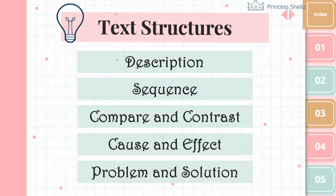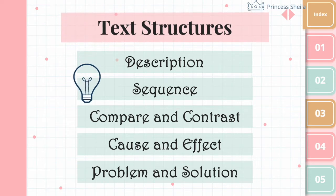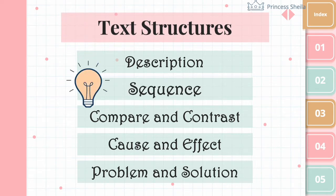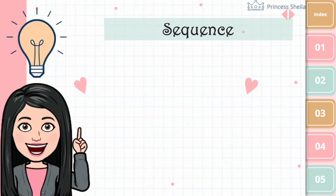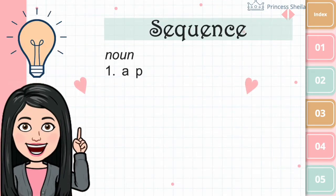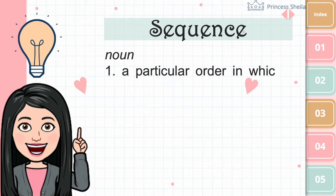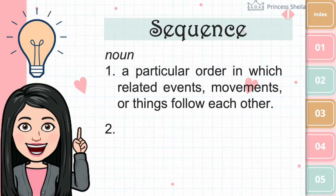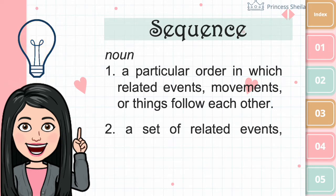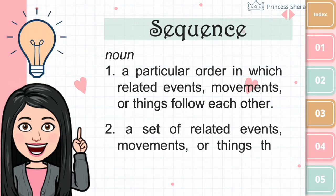For today's lesson, we will focus on sequence text structure. What does sequence mean? It is a particular order in which related events, movements, or things follow each other. It is a set of related events, movements, or things that follow each other in a particular order.